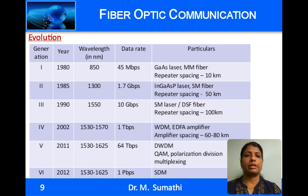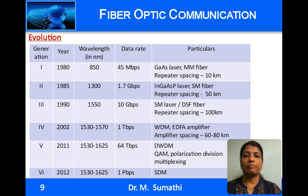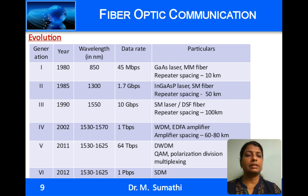Moving on to the evolution of fiber optic communication. The first generation, in the year 1980, operated at a wavelength of 850 nanometers, supporting a data rate of 45 Mbps with a repeater spacing of 10 kilometers. The second generation operated at 1300 nanometers, where both attenuation and dispersion are lesser, improving data rates greatly to 1.7 Gbps over a distance of 50 kilometers. The third generation operated at 1550 nanometers where attenuation is minimum, but dispersion is slightly higher, requiring dispersion compensation techniques such as single-mode lasers or dispersion-shifted fibers, achieving 10 Gbps over a repeater spacing of 100 kilometers.